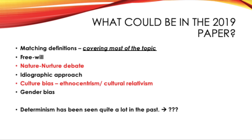So what do I think could come up in the 2019 paper? I think it's very likely that we'll see another matching definitions question, either as tick boxes or as an ABC kind of thing like we saw last year, and I do think that these will be quite broad and cover most of the topic as they did last year.